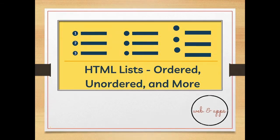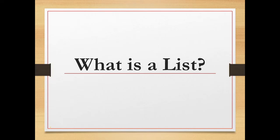Hello everyone and welcome back to my channel Web and Apps. Today the video is all about HTML lists, which come in the form of ordered, unordered, and many more. If we ask what is a list — every day we make a list of things we have to do or things we want to buy. Sometimes we write it as bullets, sometimes in numeric format. We always make one or another kind of list.